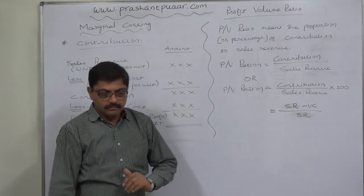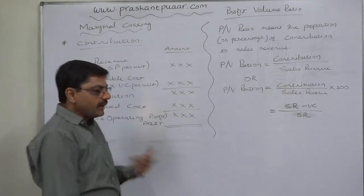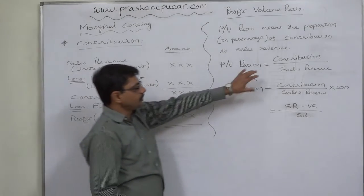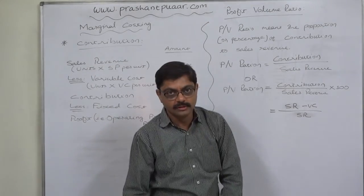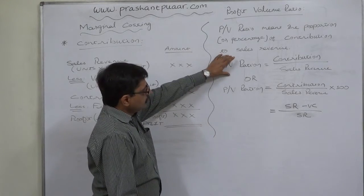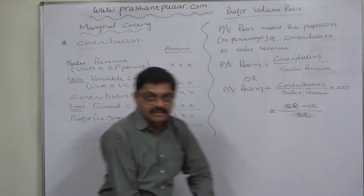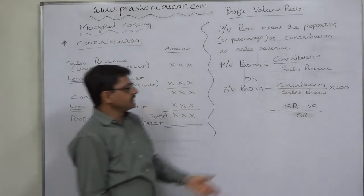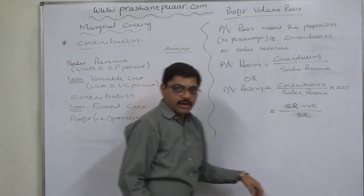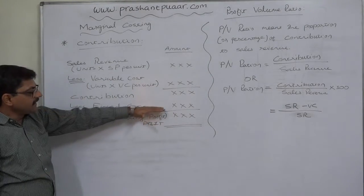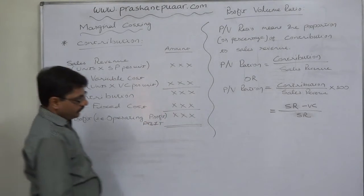We are interested in knowing what proportion of sales is the contribution. The PV ratio shows the proportion of contribution to sales revenue. That means how much percentage of our sales revenue is contribution. Because our contribution will recover our fixed cost as well as profit.